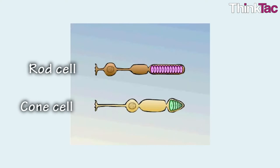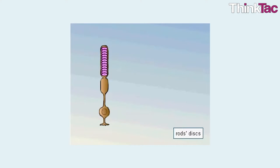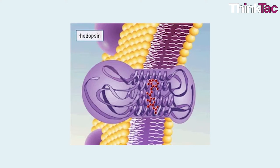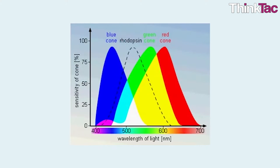Rods and cones have similar structures with a cell body, a synaptic terminal that connects to the nerves, and multiple discs with pigments. These discs contain a photosensitive protein rhodopsin in rods, and photopsin (there are three types, one for each color) in cones.